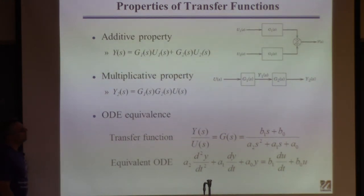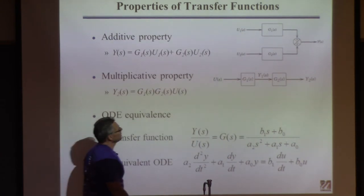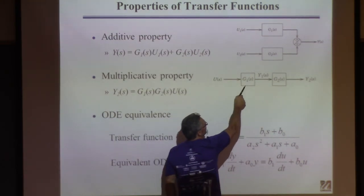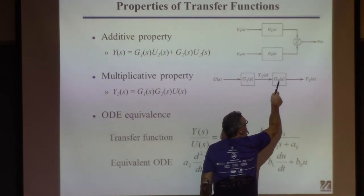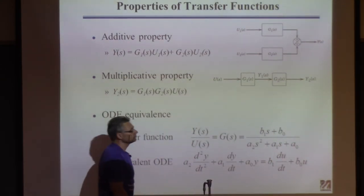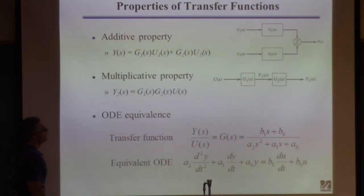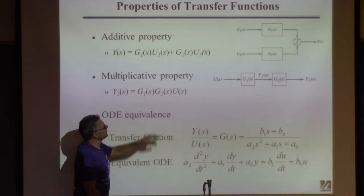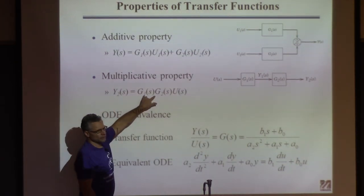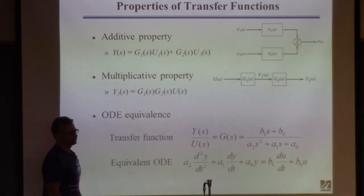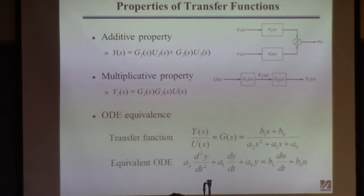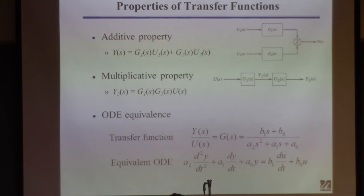What if you have transfer functions in series? The picture says: put the input through a transfer function G1 to get some signal Y1, then put that through transfer function G2 to get output Y2. The equivalent equation is Y2 = G2*G1*U — you multiply the two transfer functions. So if they're in series, you multiply; if they're in parallel, you add. This is convenient because we'll frequently have complex block diagrams that we want to simplify for analysis.